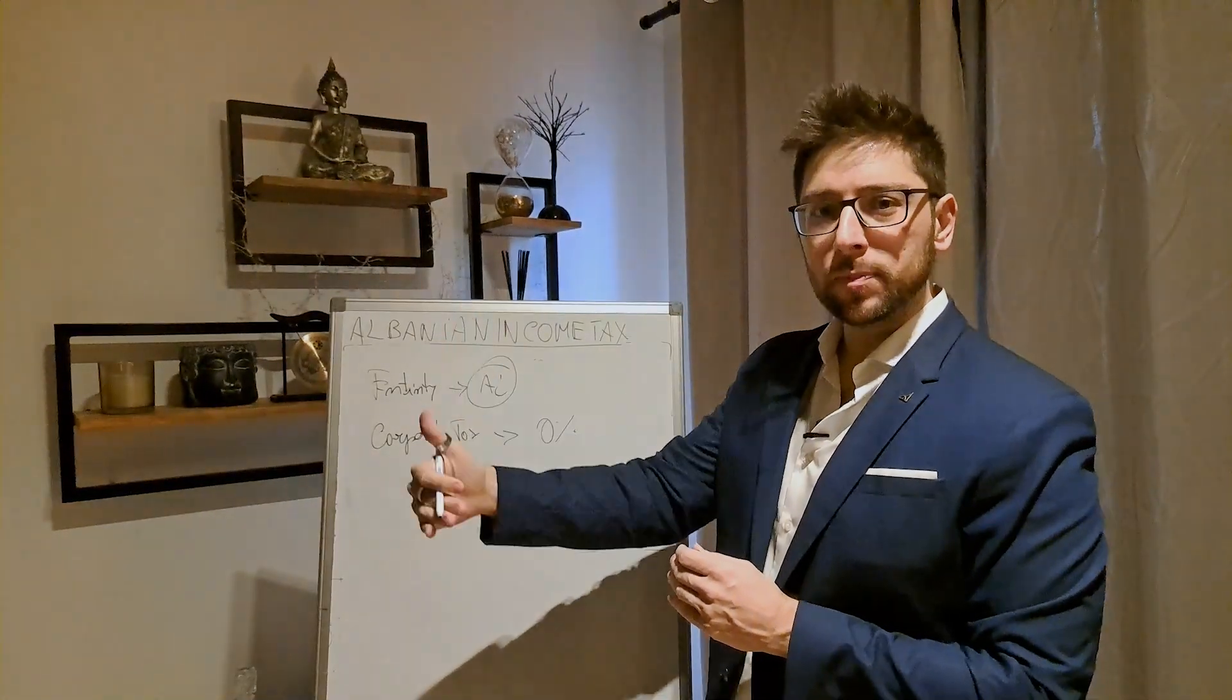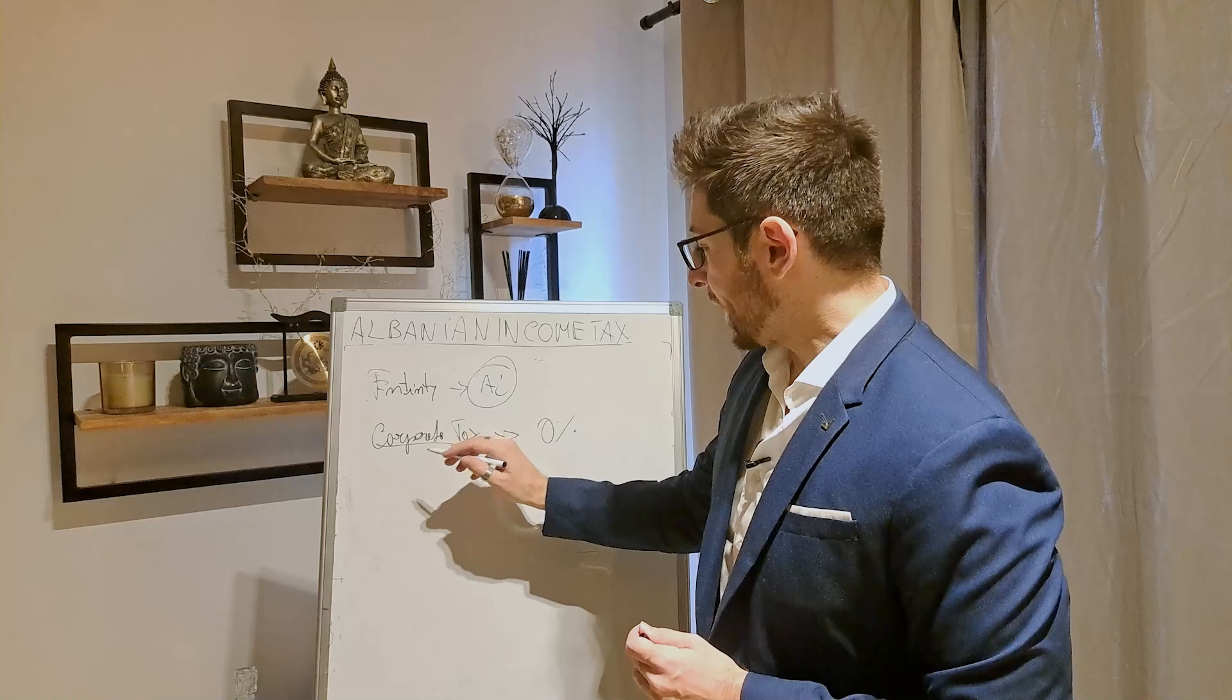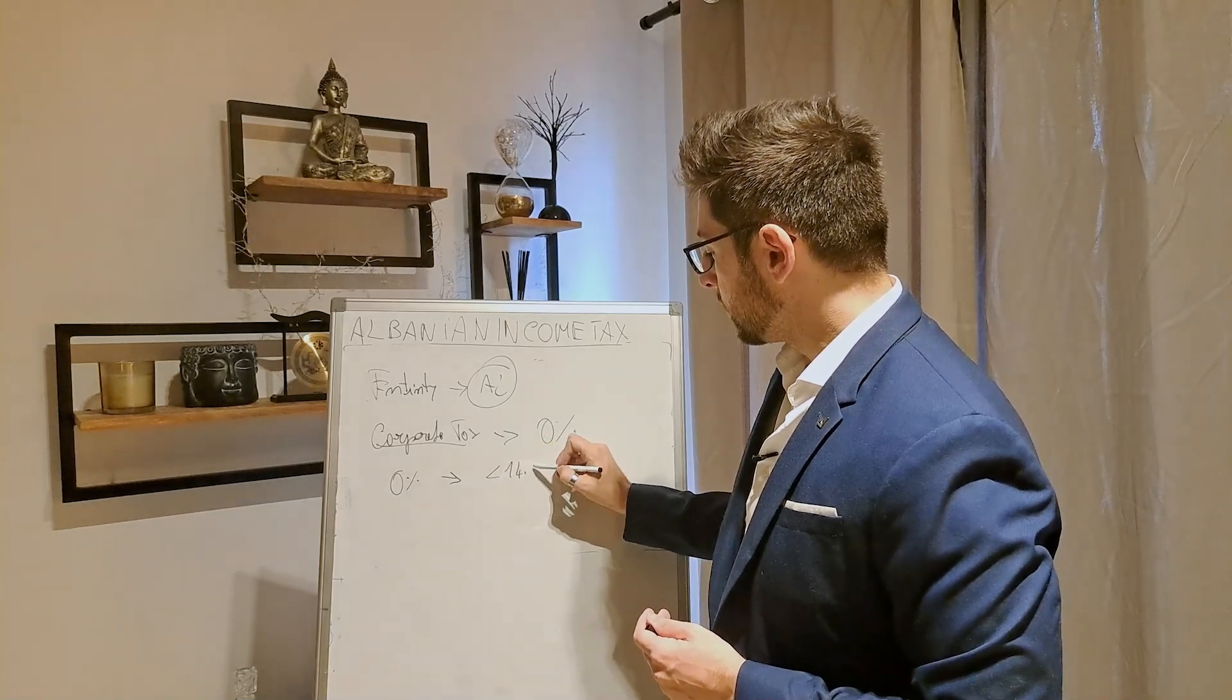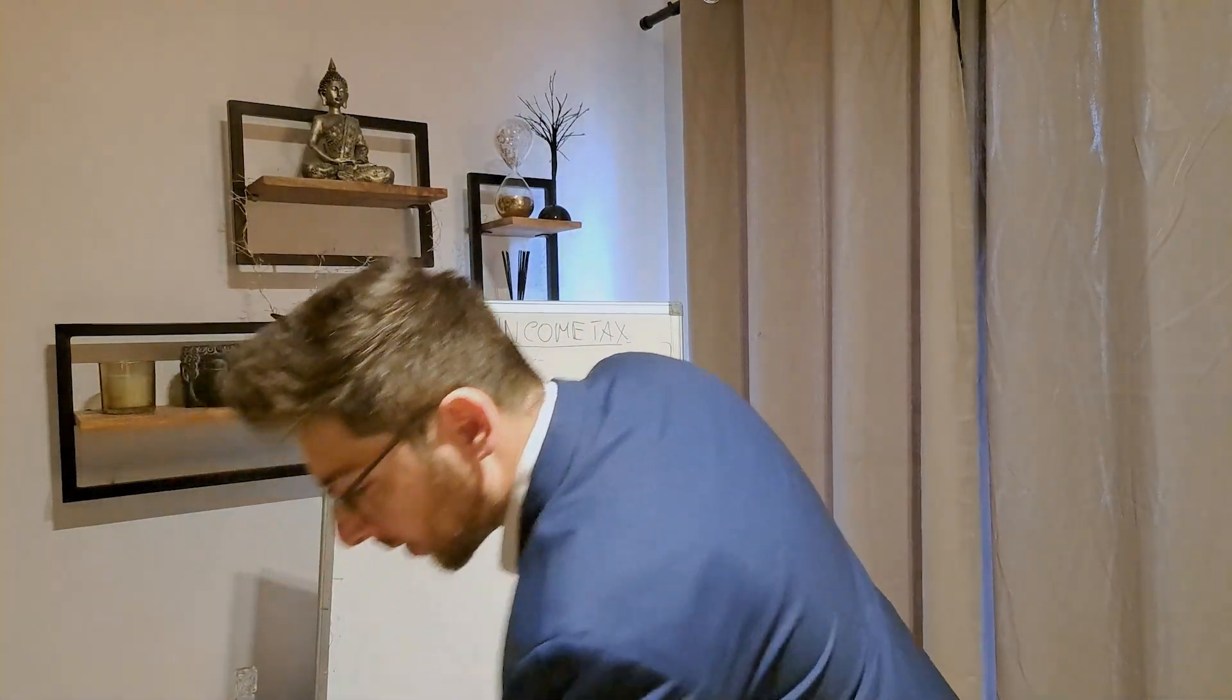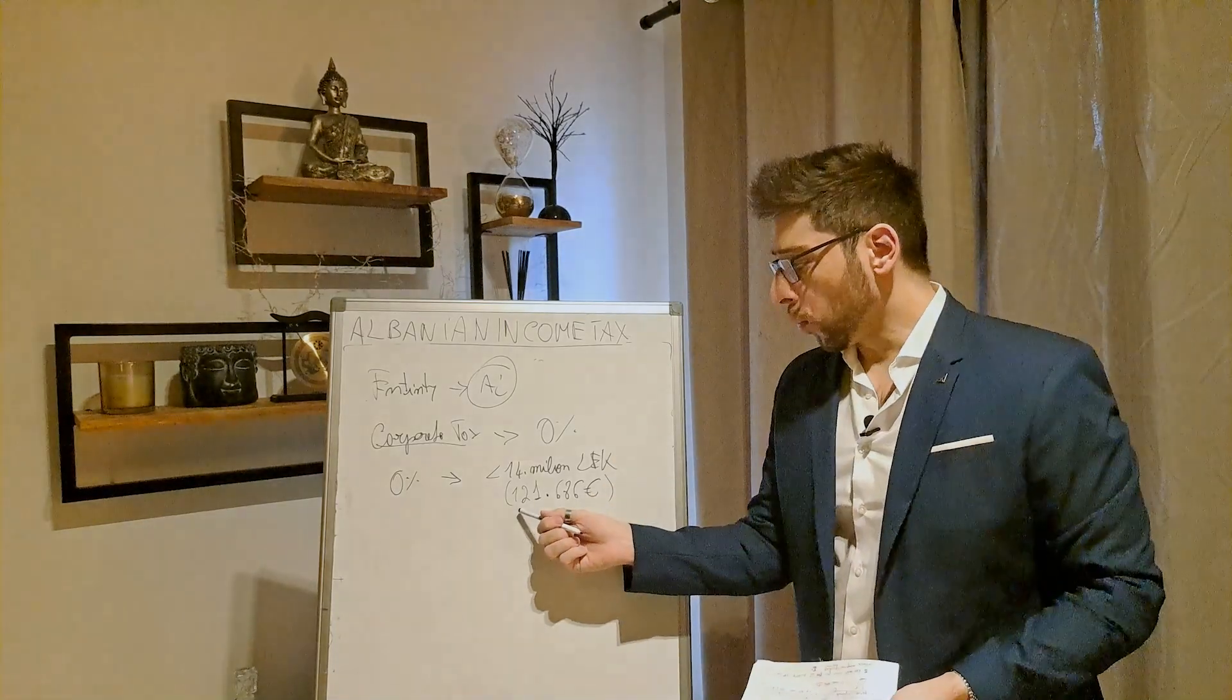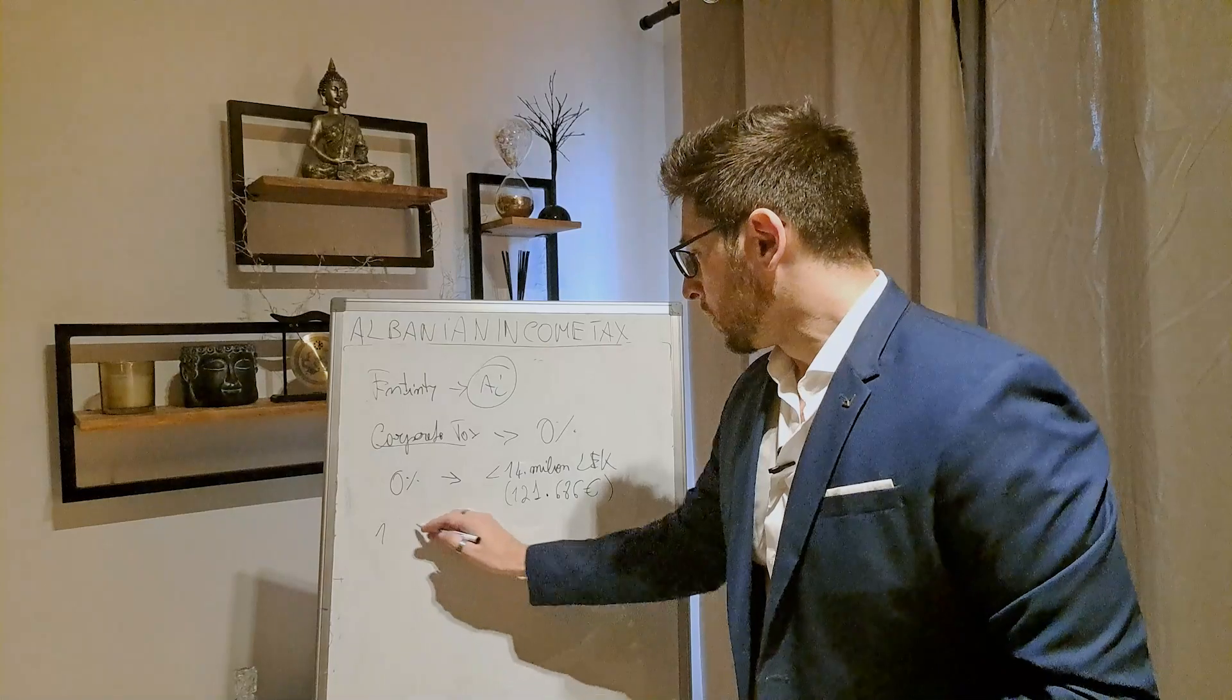And after this limit will be at 15%. So we will have a sort of double tax bracket that works like this. So the profit is taxed at 0% if your profit is below 14 million lek, which is in euro. It's like, let me check here my notes, it's 121,686 euro, okay? So up to 121,000 euro, you pay 0% in profit. And this is very good. Everything above will be at 15%.